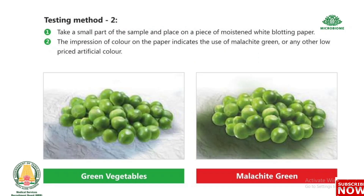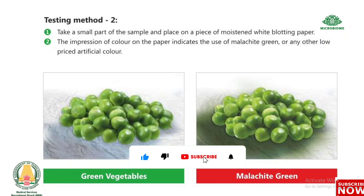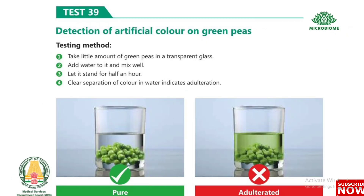Test 38, Method 2: Take a small part of the sample and place on a piece of moist white blotting paper. The impression of color on the paper indicates the use of malachite green or any other low-priced artificial color. Test 39: Detection of artificial color on green peas. Take a little amount of green peas in a transparent glass, add water, mix well, and let stand for half an hour. Clear separation of color in water indicates adulteration.